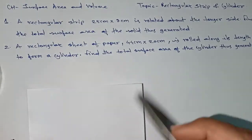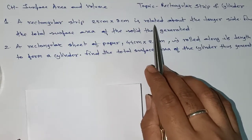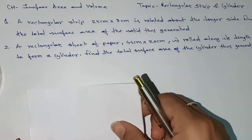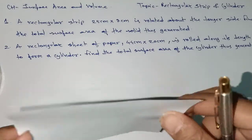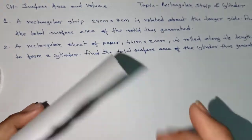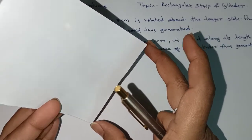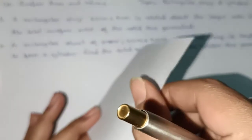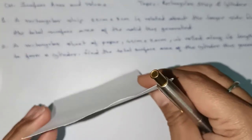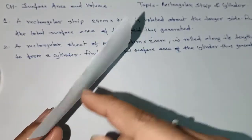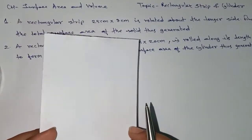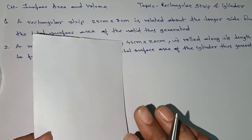In the first case, if you rotate this whole part, the smaller side becomes the radius. If you rotate it like this, this strip will cover the whole part and give you a solid cylinder. This is where students get confused.